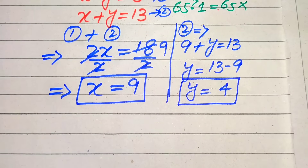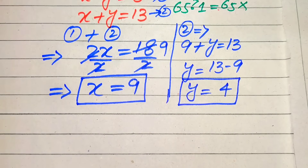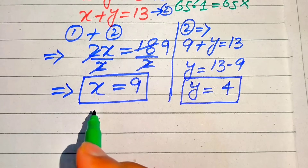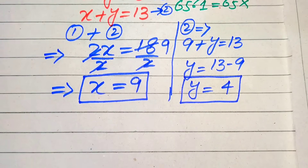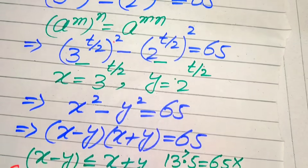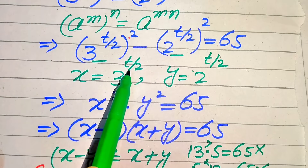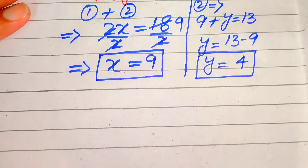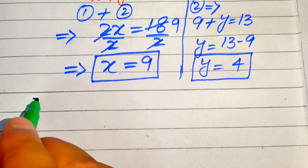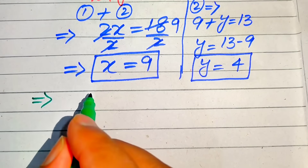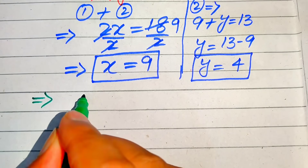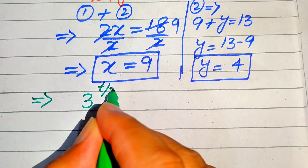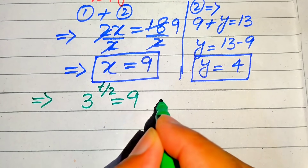We back-substitute the values of x and y to find t. Recall that x equals 3 to the power of t over 2 and y equals 2 to the power of t over 2. Substituting, we have 3 to the power of t over 2 equals 9 and 2 to the power of t over 2 equals 4.